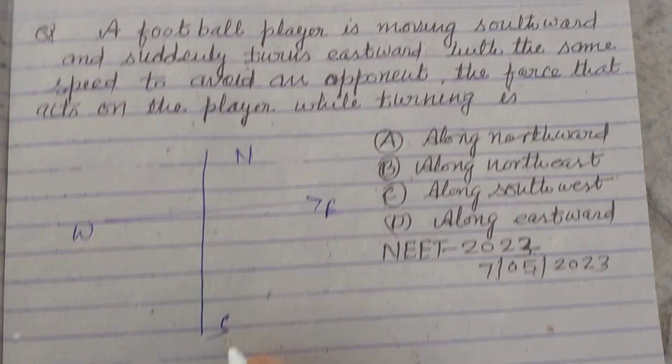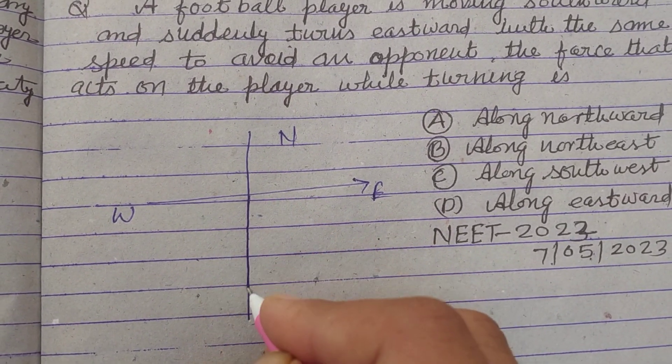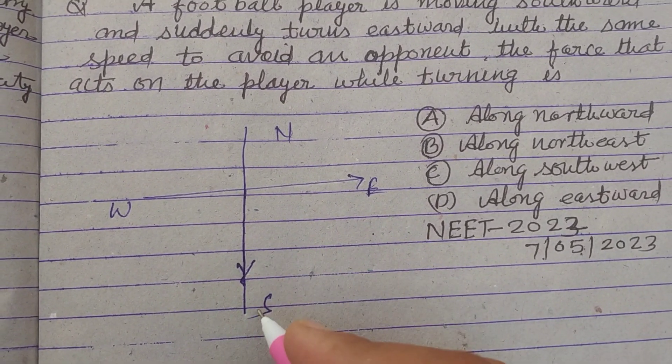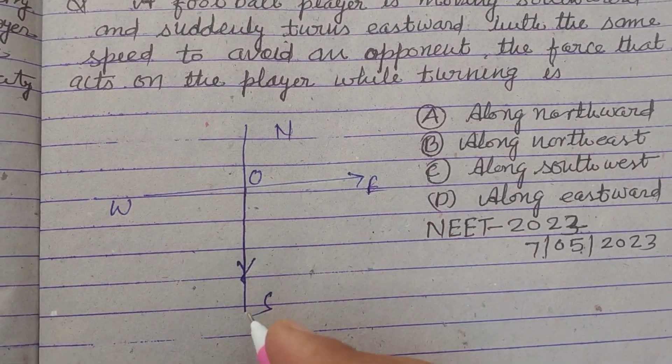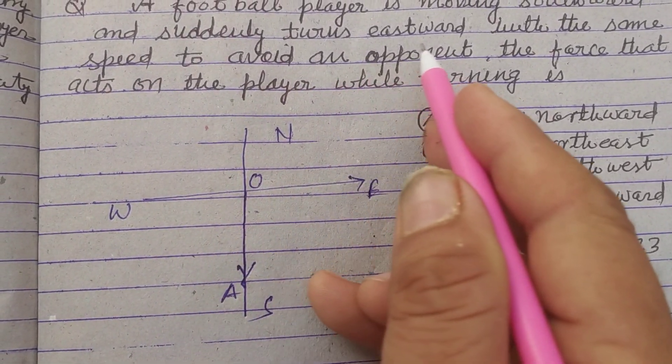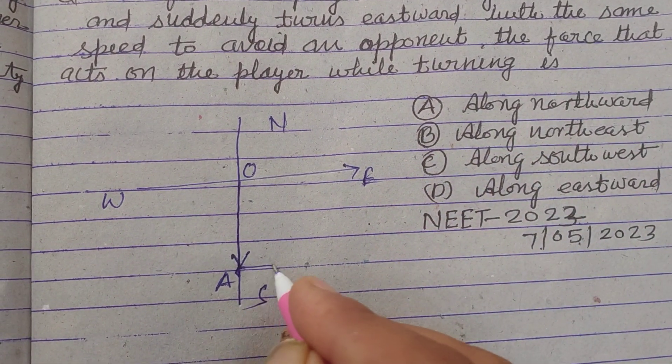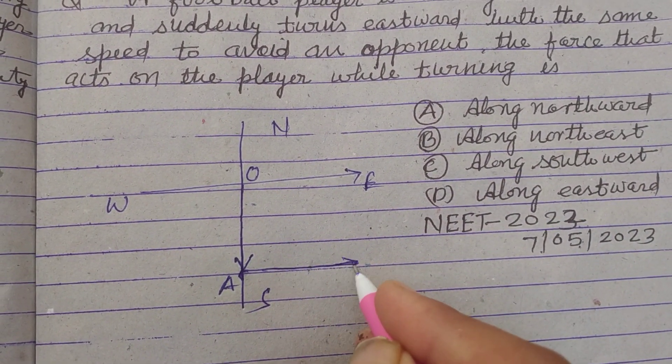So the football player is moving in southward direction. Let it start from A, O to A, and suddenly turn eastward, eastward direction.